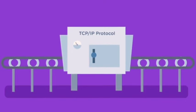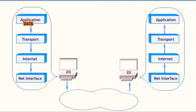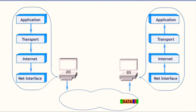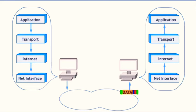First up, we have the network interface layer — it's the foundation, dealing directly with the hardware and raw data. Next, we find the internet layer, which is all about routing, helping data packets find their way across the vast internet landscape. Moving up, we meet the transport layer, whose job is to ensure data delivery is reliable, handling things like error checking and packet reordering. Finally, at the top, we have the application layer.